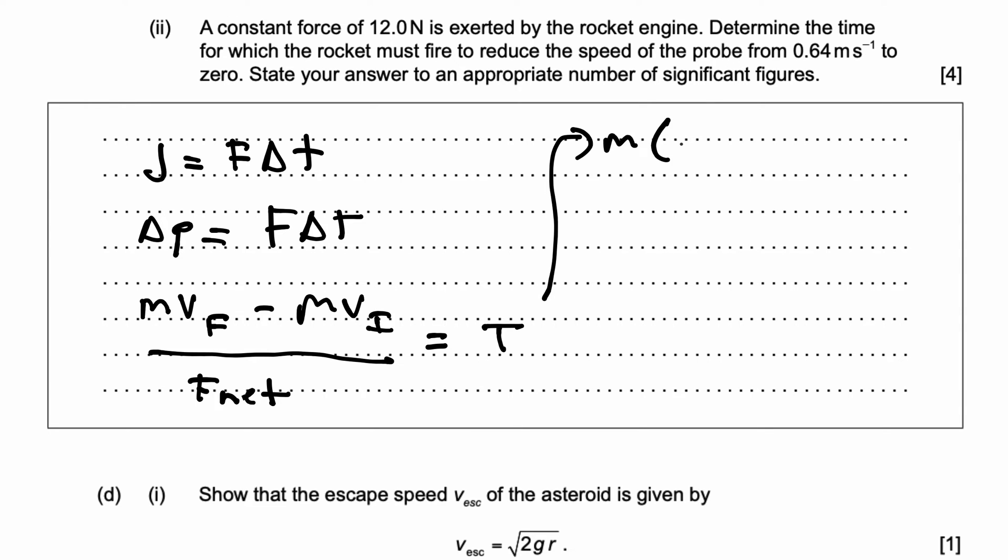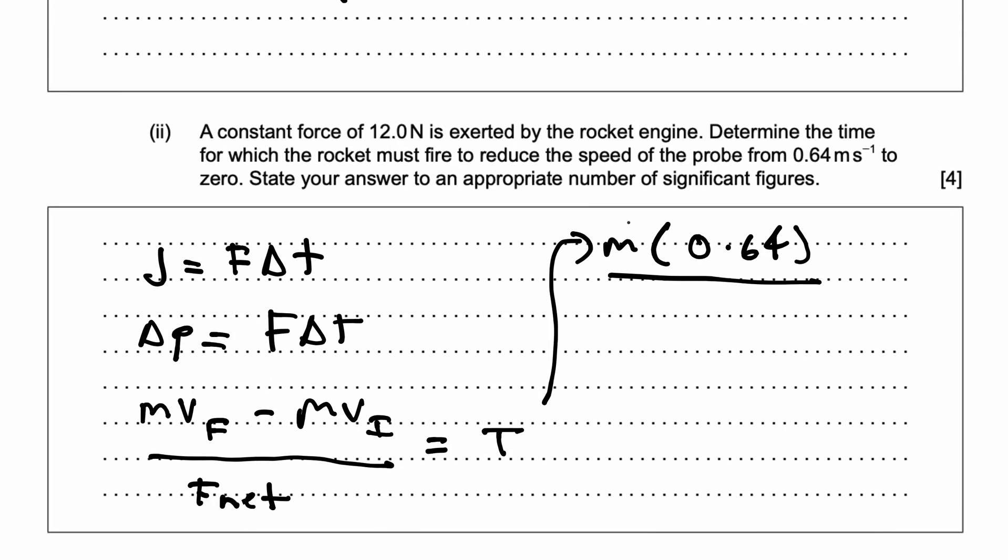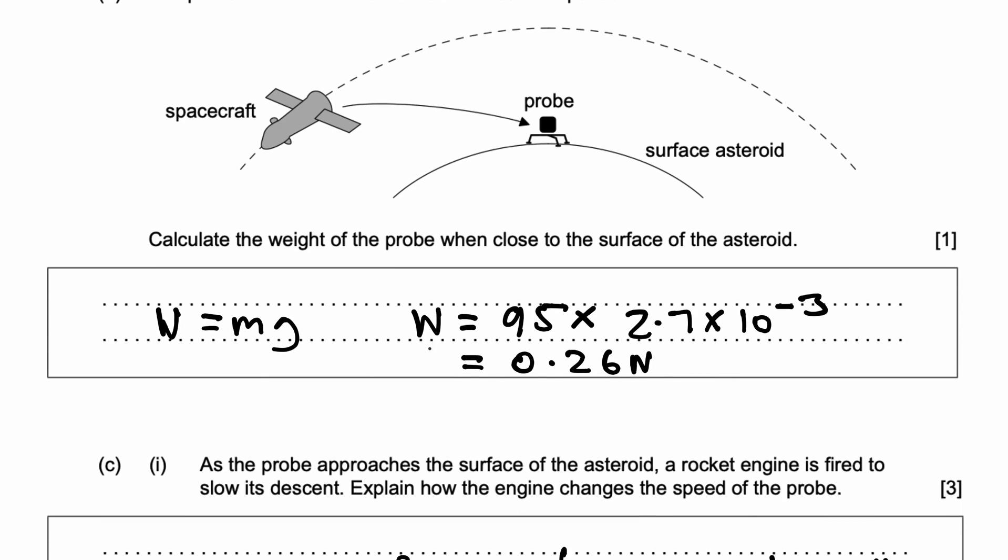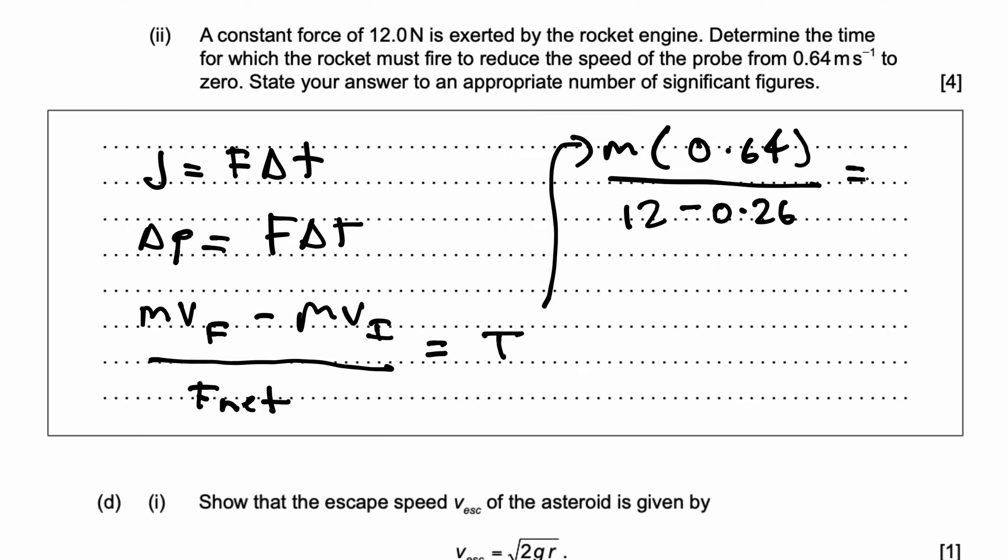Essentially, it's just going to be 0.64. Over the net force, which is, in this case, we know, 12 newtons minus—don't forget—the rocket has a weight. The rocket has a weight, which we calculated earlier, 0.26, and that gives me time.